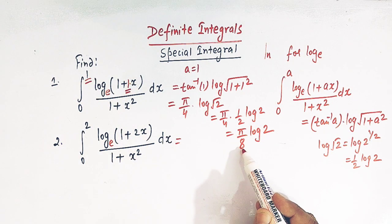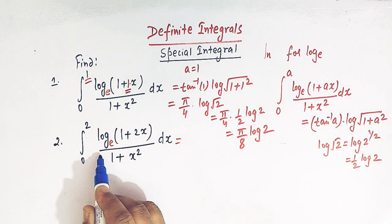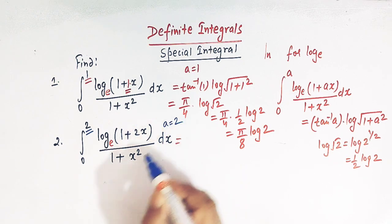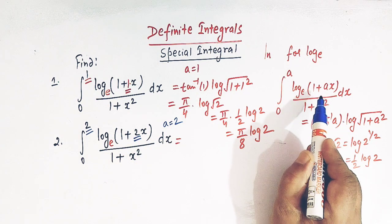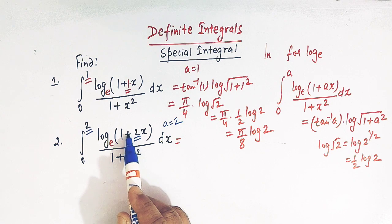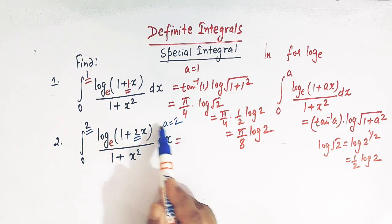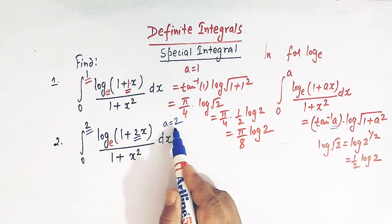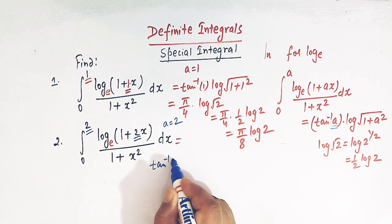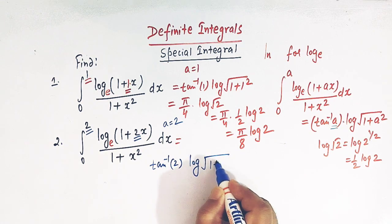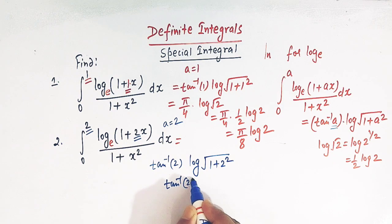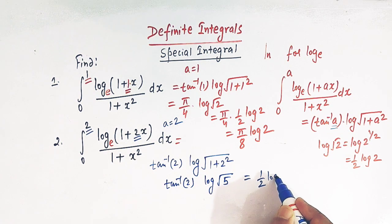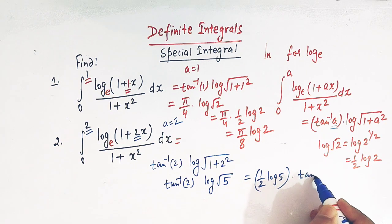Now let us take the second integral. Comparing this integral with the general form, the value of a is 2, because here we have 1 + 2x, so a = 2. The direct value is obtained by taking a = 2 in the general result: arctan(2) times log of the square root of 1 + 2 squared. That gives arctan(2) times log of the square root of 5, which we can write as (1/2)log 5 · arctan(2).